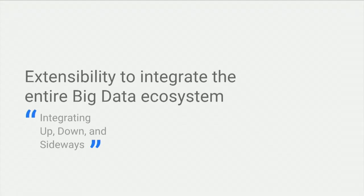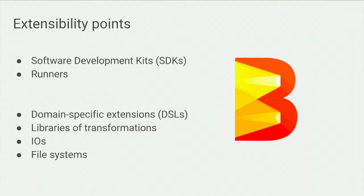Let's talk about how portability can turn into extensibility and integrate the big data ecosystem. Beyond SDKs and runners, there are four more extensibility points: domain-specific extensions, libraries of transformations, IOs, and file systems. When you put all these things together, Apache Beam can connect different systems. In Beam we have two SDKs today — Java and Python — and four runners: Apache Apex, Apache Flink, Apache Spark, and Google Cloud Dataflow. In-progress runners include Apache Gear Pump, JStorm, and Spark 2.0 structured streaming, with additional runners being investigated.